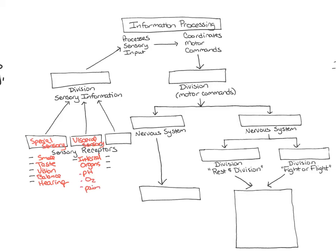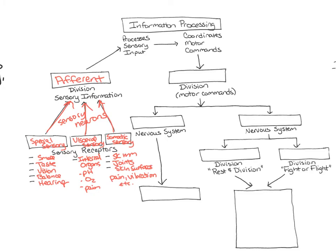The third type is the somatic sensory receptor, found in skeletal muscles, joints, and skin surfaces. They detect things like pain, vibration, temperature, and proprioception. These receptors generate action potentials in sensory neurons, which travel through the peripheral nervous system towards the central nervous system — in nerves towards either the brain or the spinal cord. This portion of the peripheral nervous system is called the afferent division.